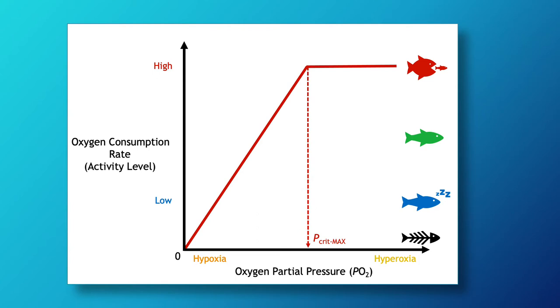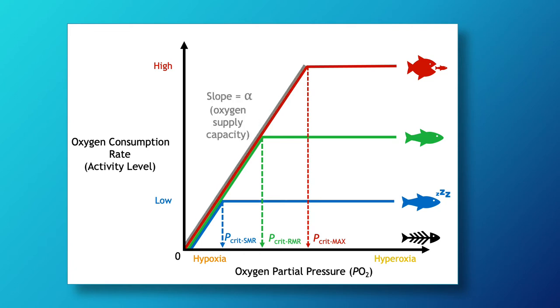This inflection point is called the critical oxygen partial pressure, or P_crit, and it marks the transition between oxygen independence at higher oxygen and oxygen dependence as oxygen falls. There is a limiting oxygen level for any metabolic rate, and it decreases as metabolic rate decreases. The most important takeaway from this slide is the regions below P_crit for any metabolic rate are parallel. The slope of that line is what we measure as the oxygen supply capacity.